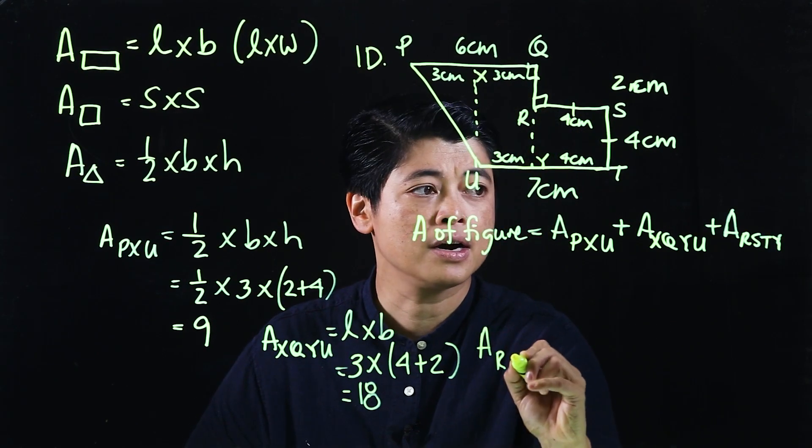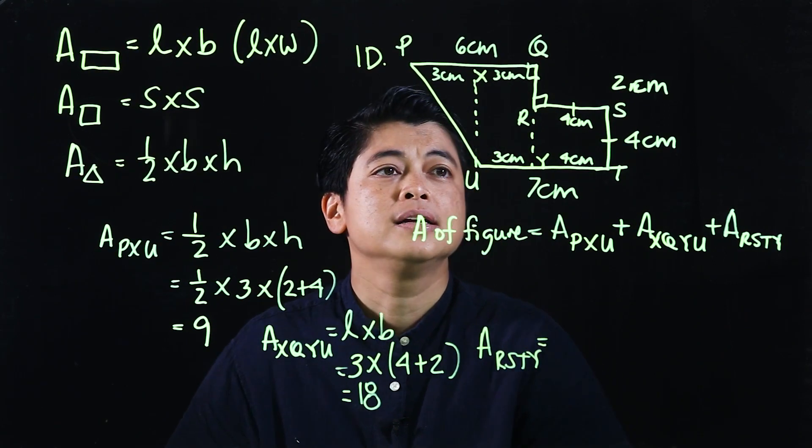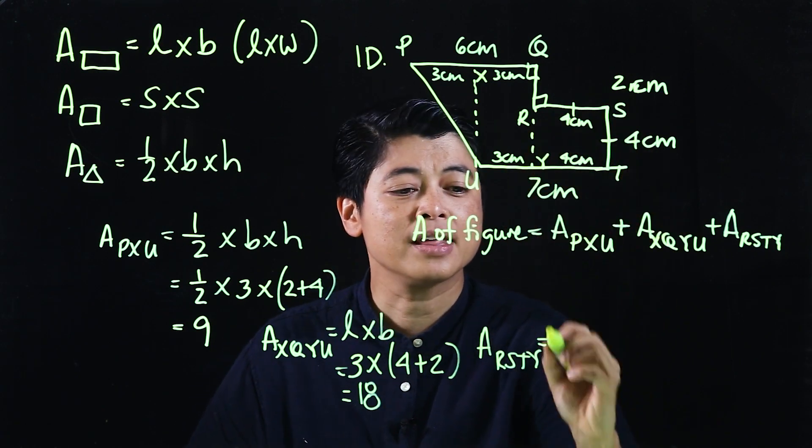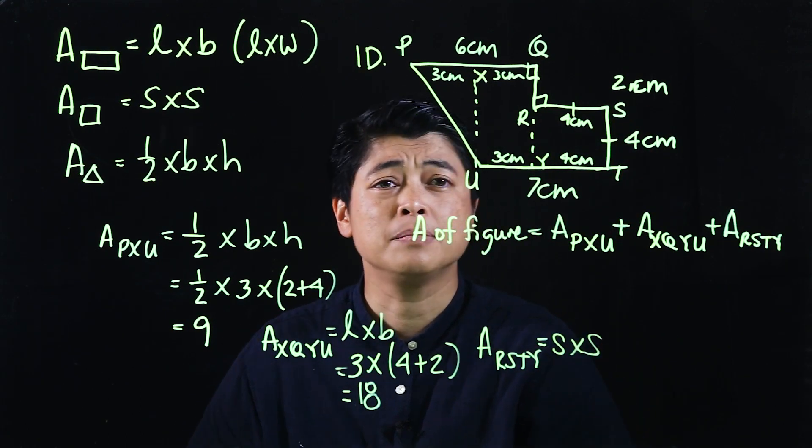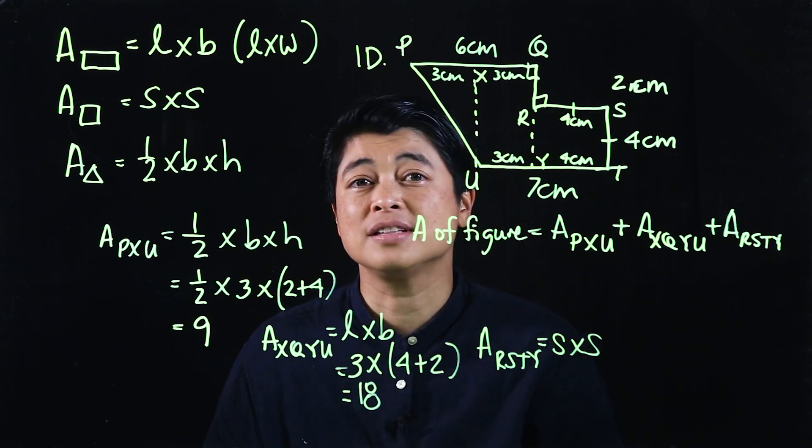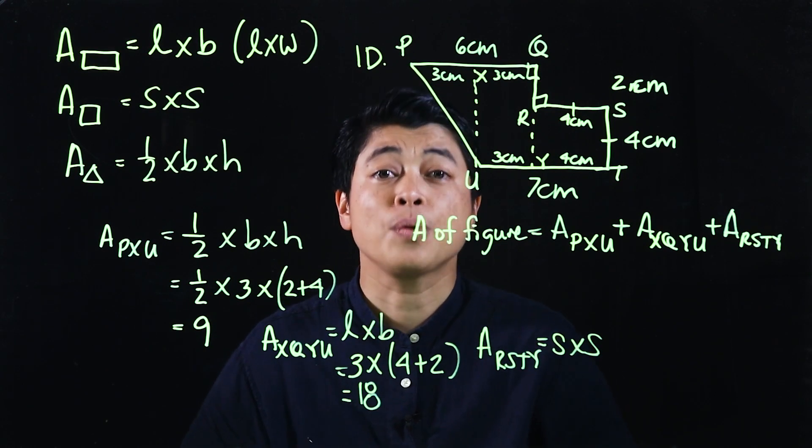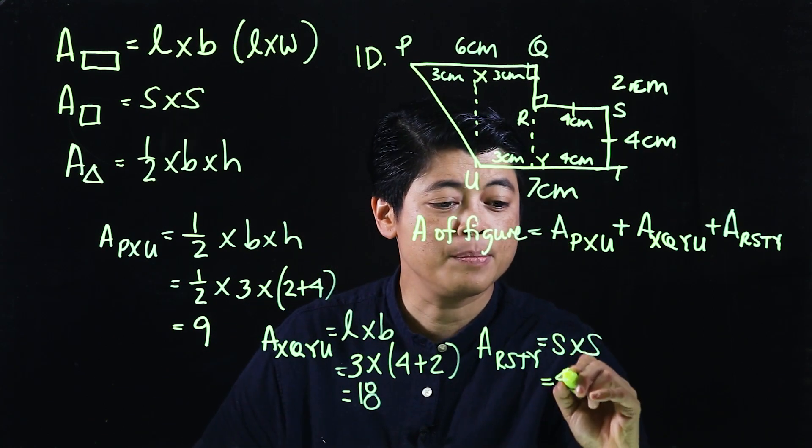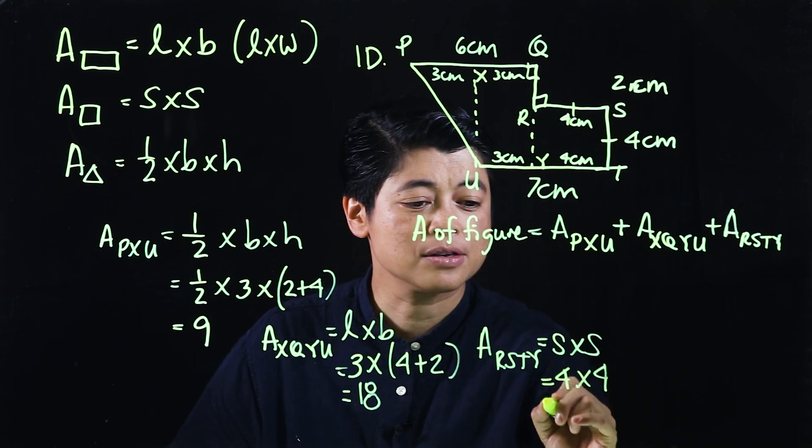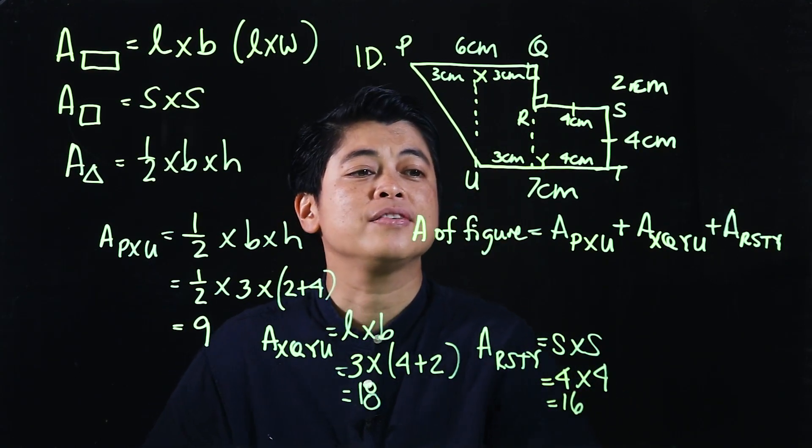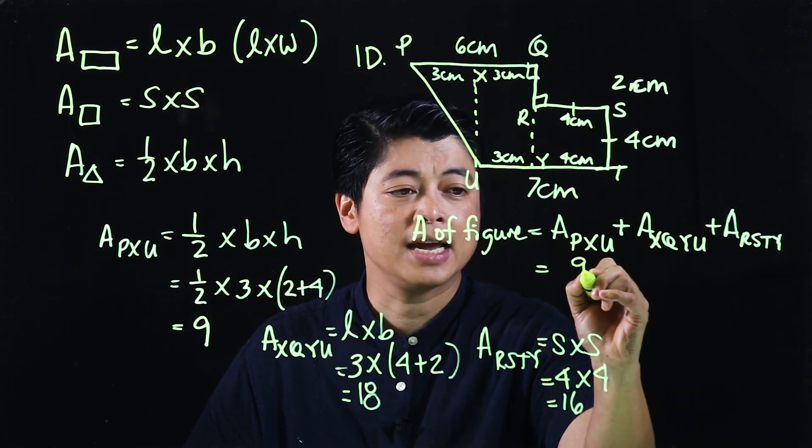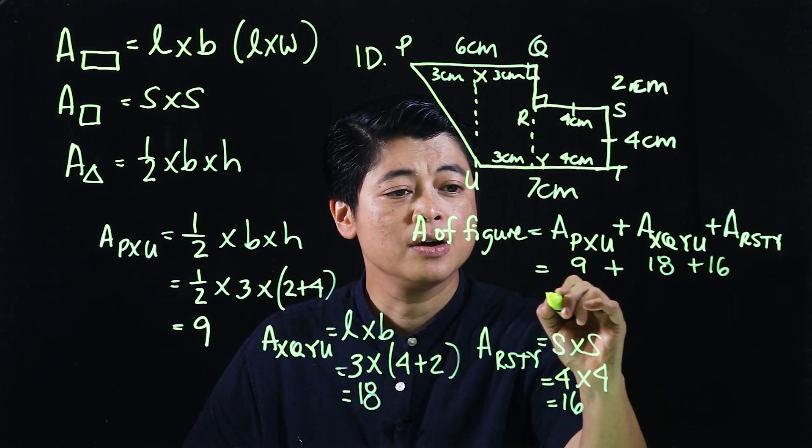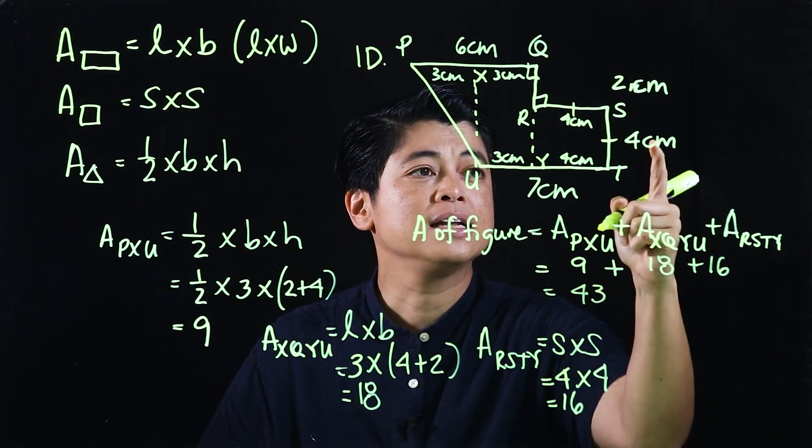If we move further, this would be area of RSTY. You can call it a rectangle, but clearly this is a square, so if it's a square then that means side times side. If we take that to be 4 times 4, that means that's going to be 16. Now if I add 9 plus 18 plus 16, we should get 43. Since our unit of measurement is centimeters, this will be centimeters squared.